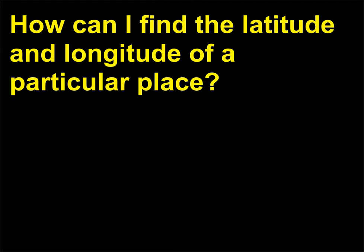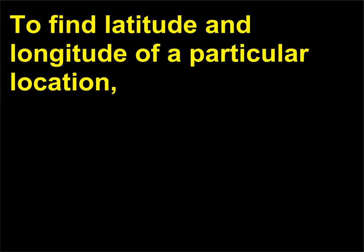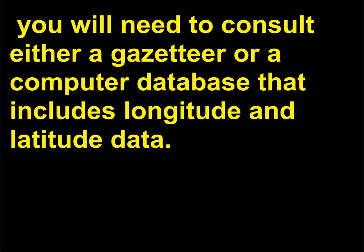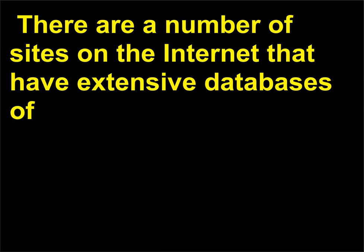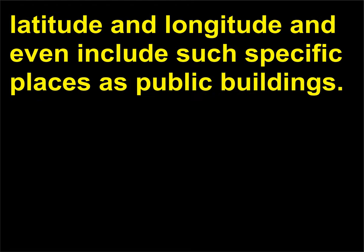How can I find the latitude and longitude of a particular place? To find the latitude and longitude of a particular location, you will need to consult either a gazetteer or a computer database that includes longitude and latitude data. Though gazetteers are readily accessible, they don't include as many places as online databases. There are a number of sites on the internet that have extensive databases of latitude and longitude, and even include such specific places as public buildings.